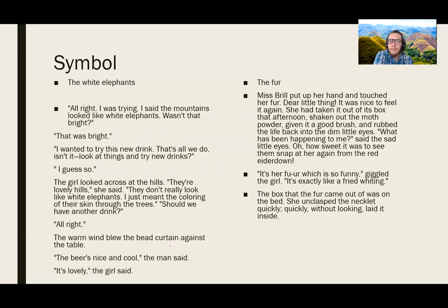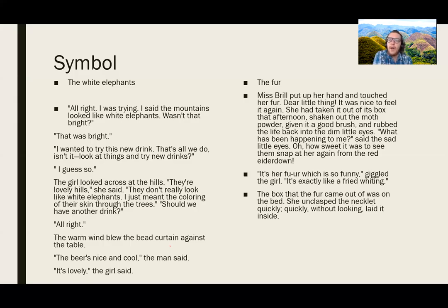And the last moment we see the fur: 'The box the fur came out of was on the bed. She unclasped the necklet quickly, quickly without looking, laid it inside.' So the story began with bringing this fur out and reanimating it, and it ends with it going back into a box. We almost have a life cycle of the fur. This mimics the experience that Miss Brill is having — she starts with excitement to go outside, she has this revelation of poetic language: everything is a play and I'm an actress and agent in it. And then like stepping off stage with the realization of how other people see her, especially these two youths.